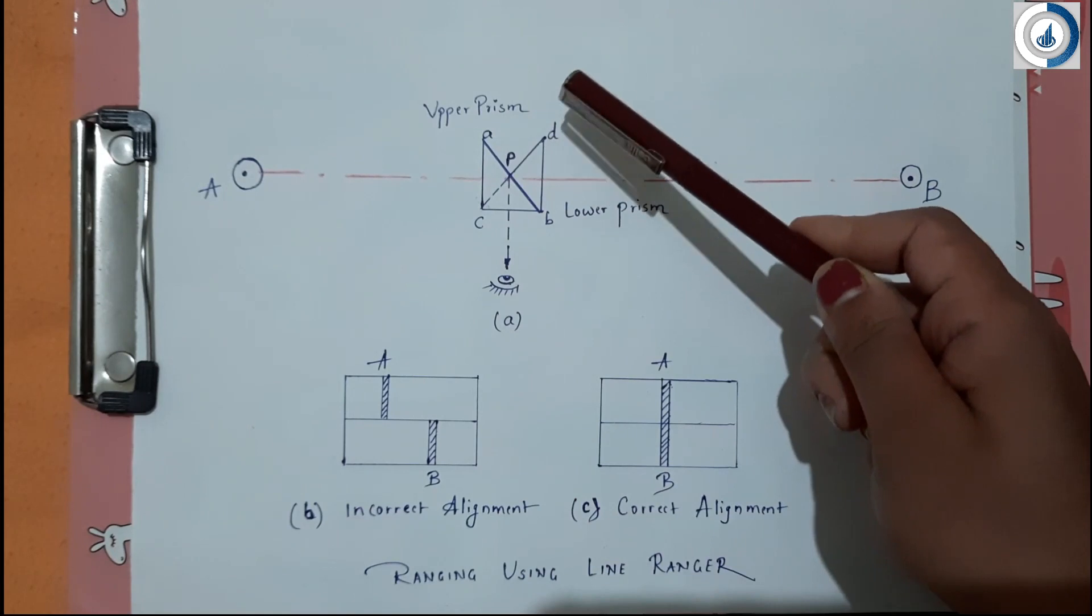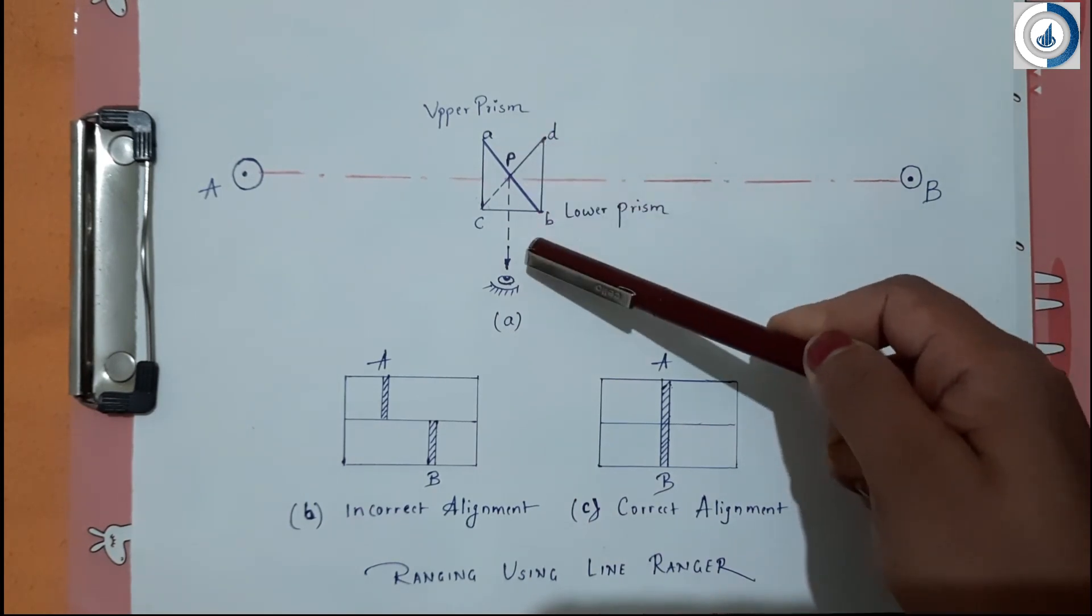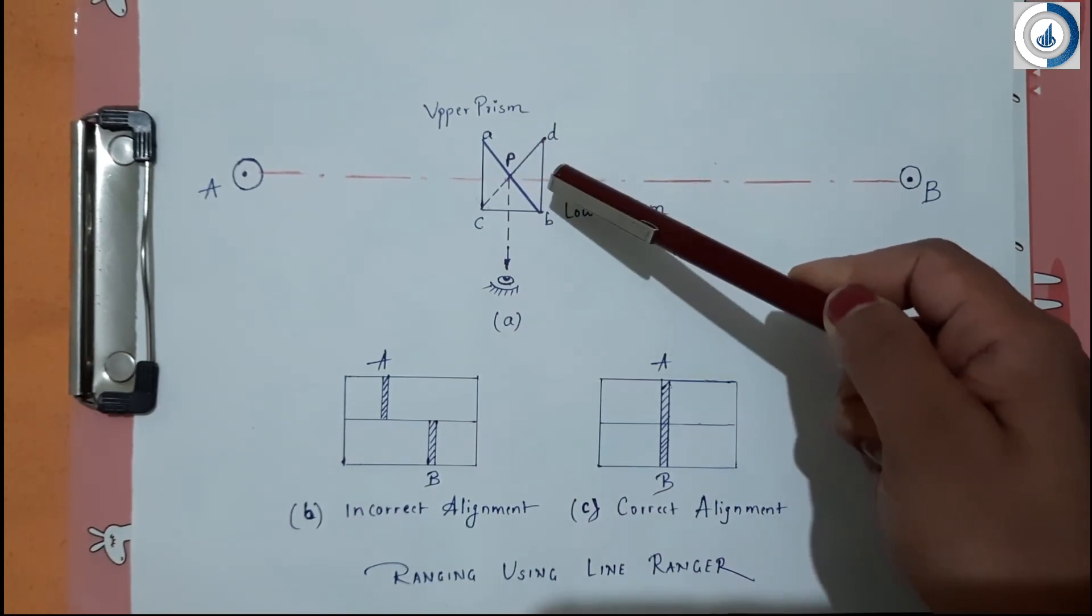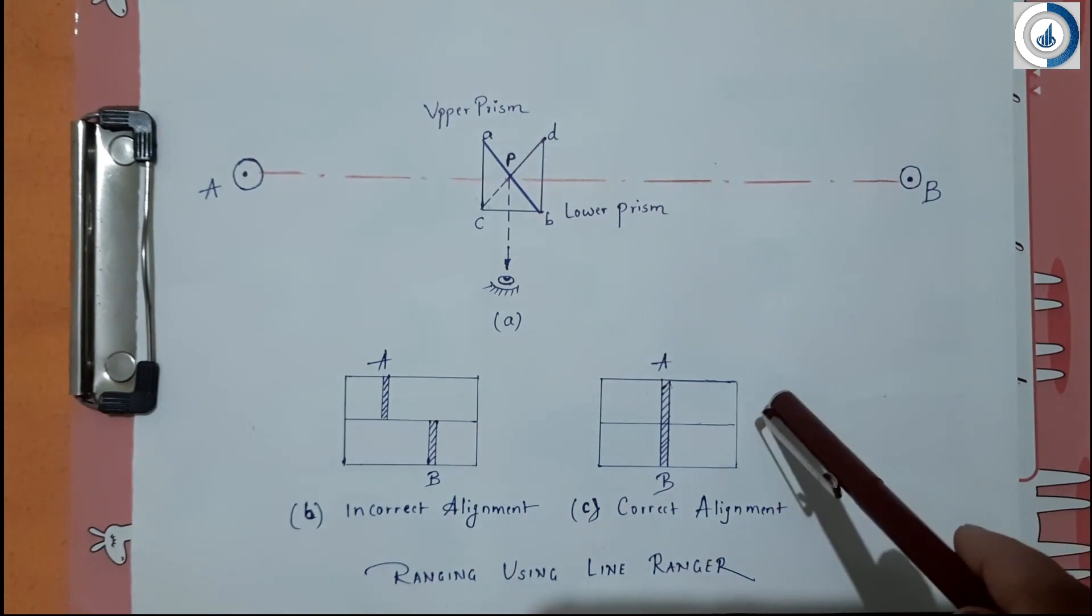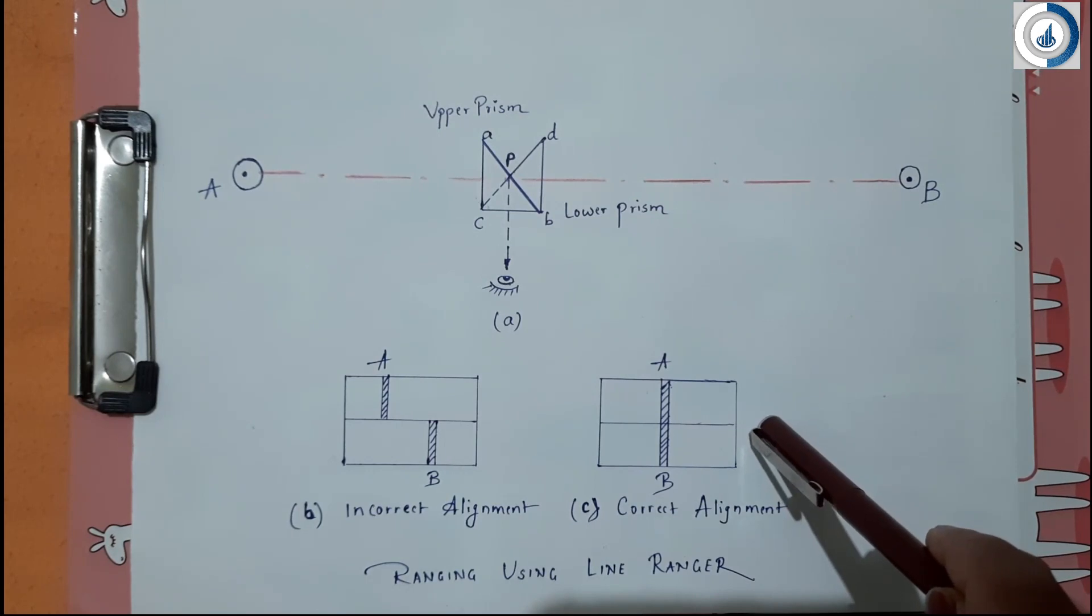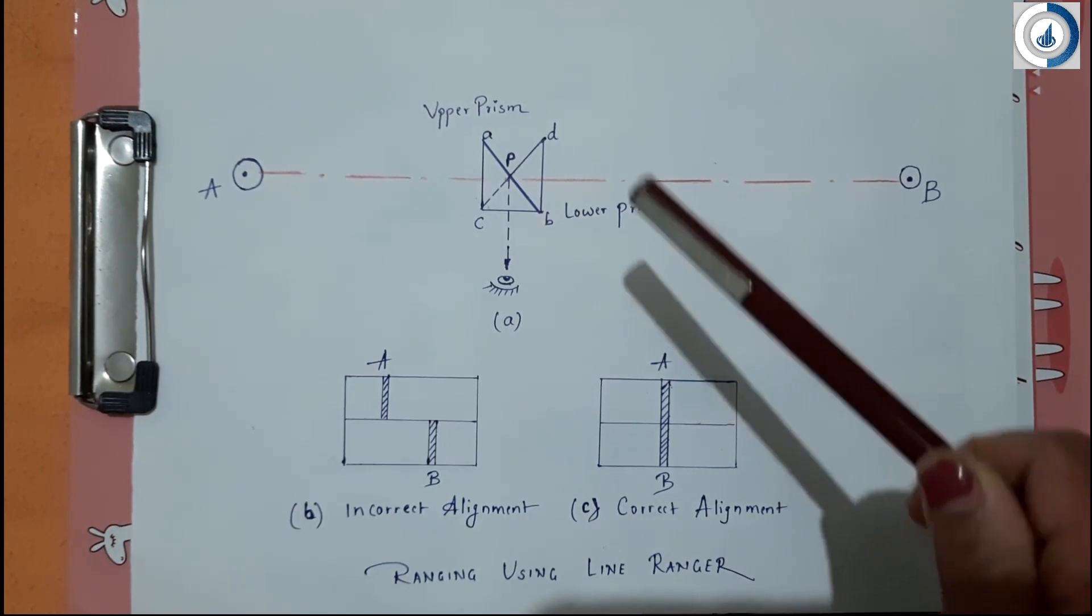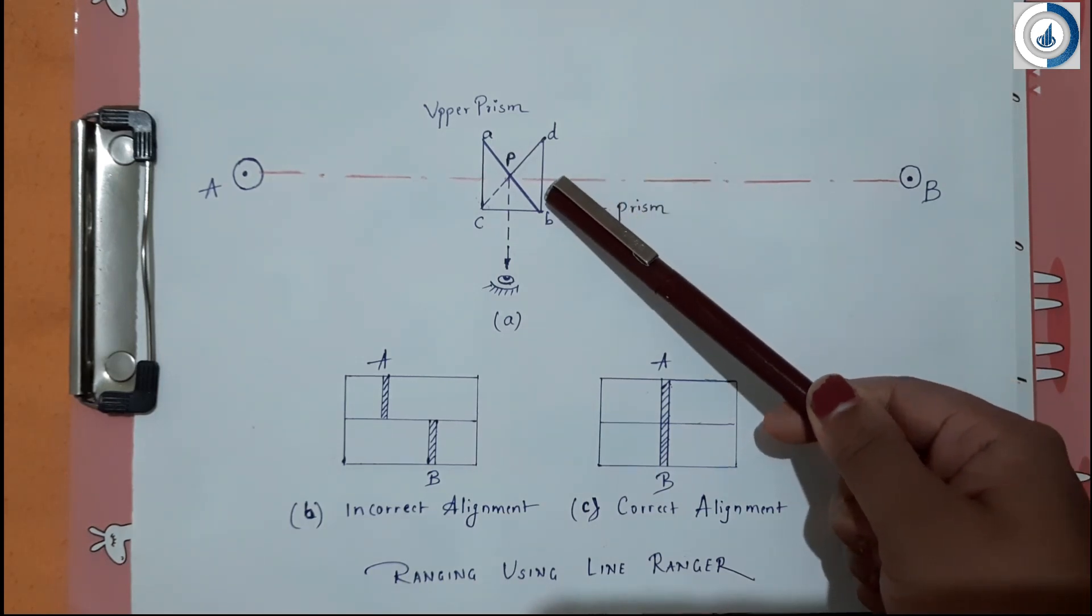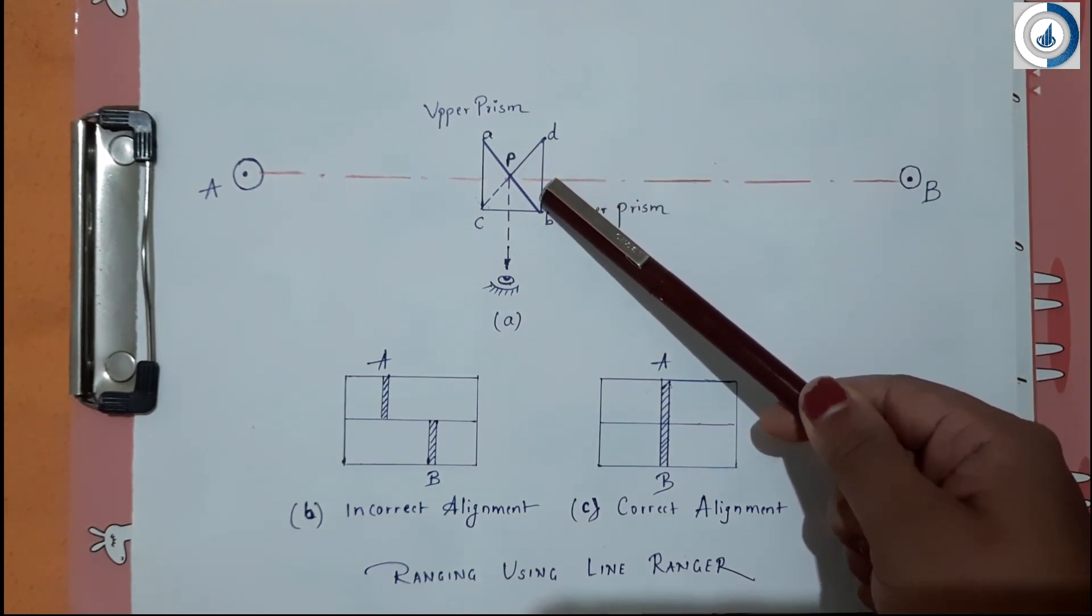He has to go on moving in front or back till the two images are in the same vertical line as shown in figure C. Like this, point P is then transferred to the ground with the help of a plumb bob.